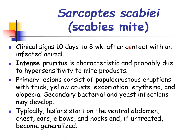The clinical signs of Sarcoptes scabiei may develop anytime between 10 days to eight weeks after contact with an infected animal. Intense pruritus is characteristic, probably due to hypersensitivity to mite products. Primary lesions consist of papulocrustous eruptions with thick yellow crust, excoriation, erythema, and alopecia. Secondary bacterial and yeast infections may also develop. Typically, lesions start on the ventral abdomen, chest, ears, elbows, and hocks, and if untreated become generalized.